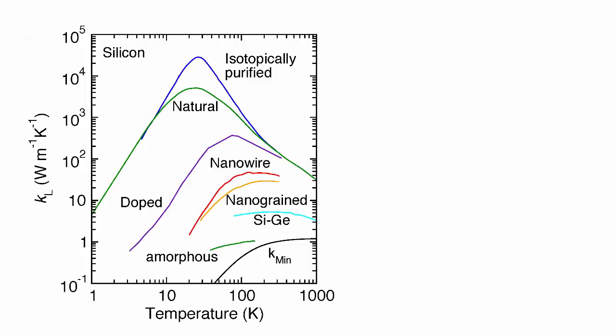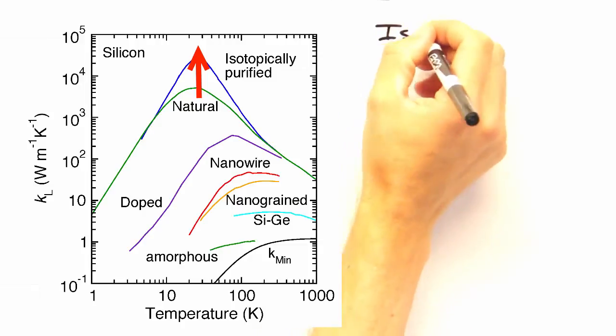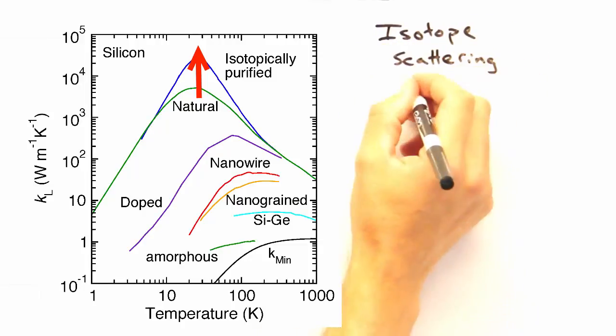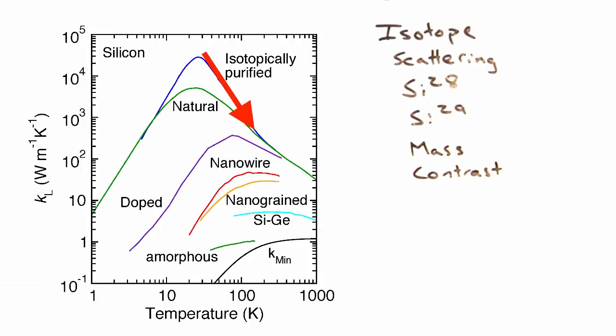Alright, next question. Let's say we start with natural silicon and remove a bunch of the isotopes that are present at more trace quantities. Why do we see this rise in our thermal conductivity? So if we remove the isotopes, we have less impurities and therefore less defects. So we have an increased mean free path, which then increases kappa. But as we increase the temperature, Umklapp scattering really just takes over, and both the natural and purified silicon converge together.